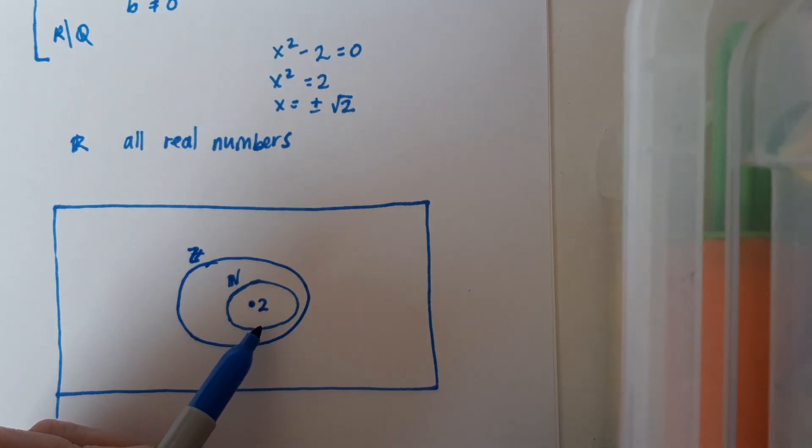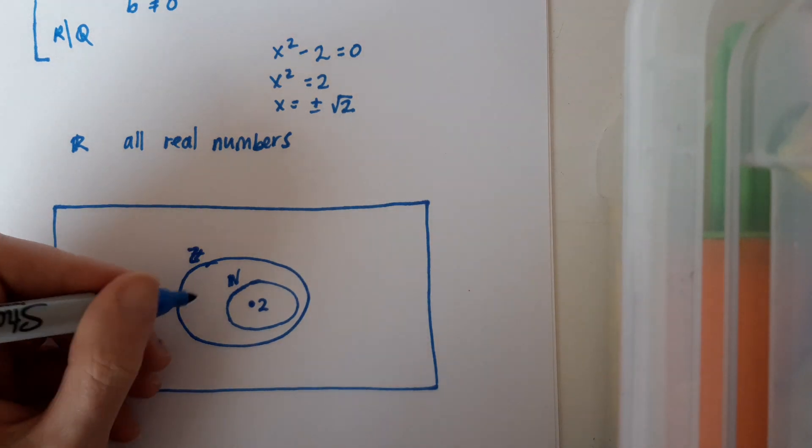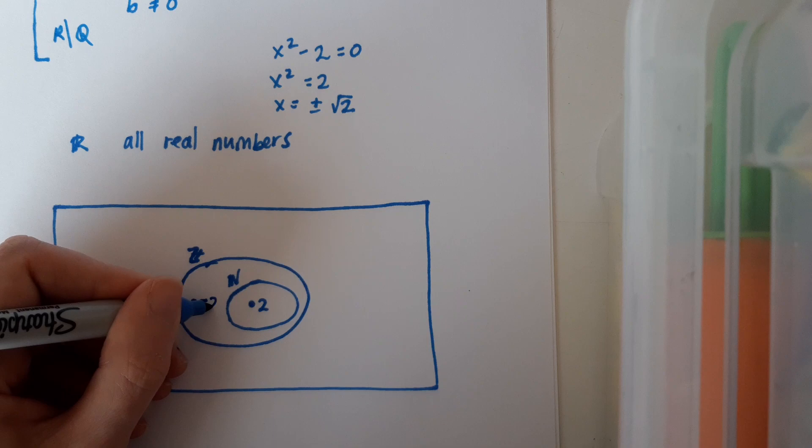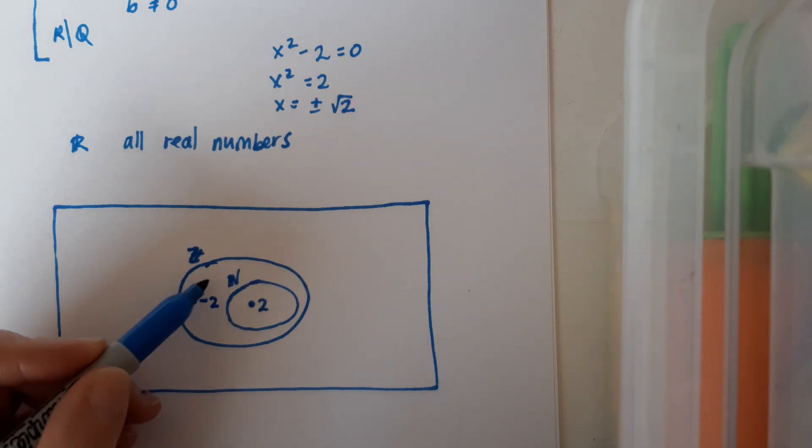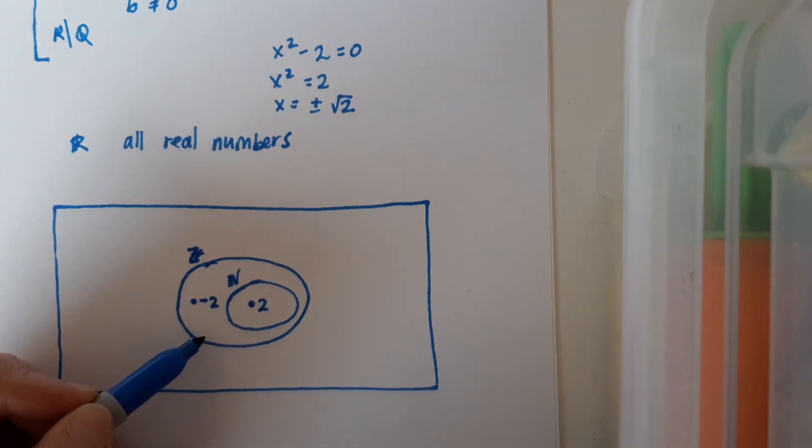And then that natural number set is contained within the integer set. So that positive number there in the natural number set, it's a natural number but it's an integer as well. And my solution from the previous examples, minus 2, would be an example of a negative number that fits into that extra portion of the integer number set. But obviously again it's not the only element.